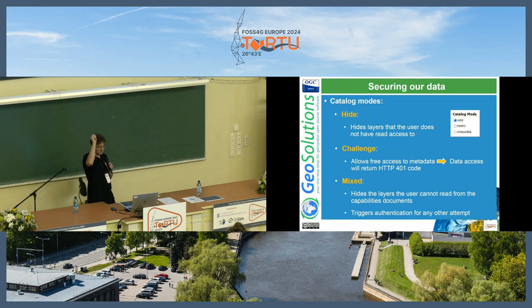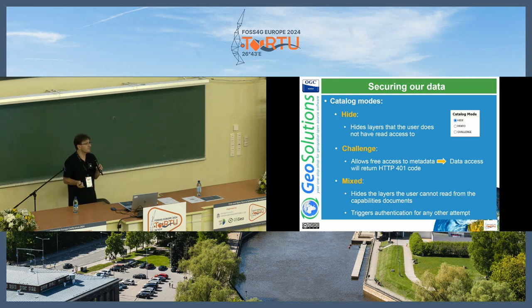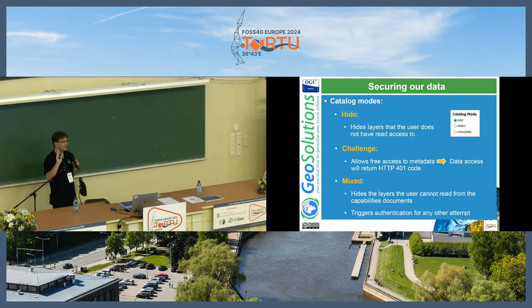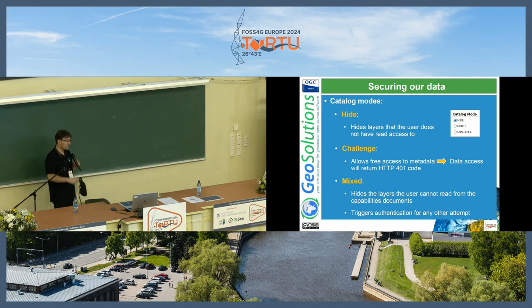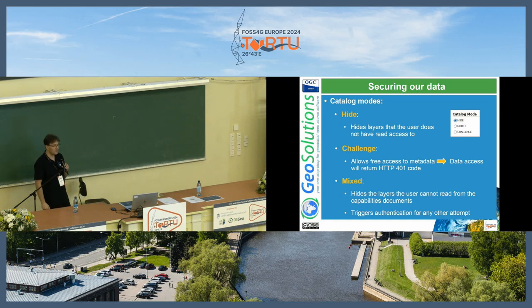This depends on the catalog mode. The catalog mode can be hide, which is the default — GeoServer will pretend the layers do not exist if you don't have rights to access them, literally telling you it doesn't know what the layer is. In challenge mode, it gives you the full list in capabilities and metadata, but the moment you try to access a secured layer, it asks you to authenticate and elevate your rights. Then there is mixed mode, which hides layers from capabilities but triggers authentication if you have a direct link to the data — this was actually the mode that funded the development of the security subsystem in GeoServer.